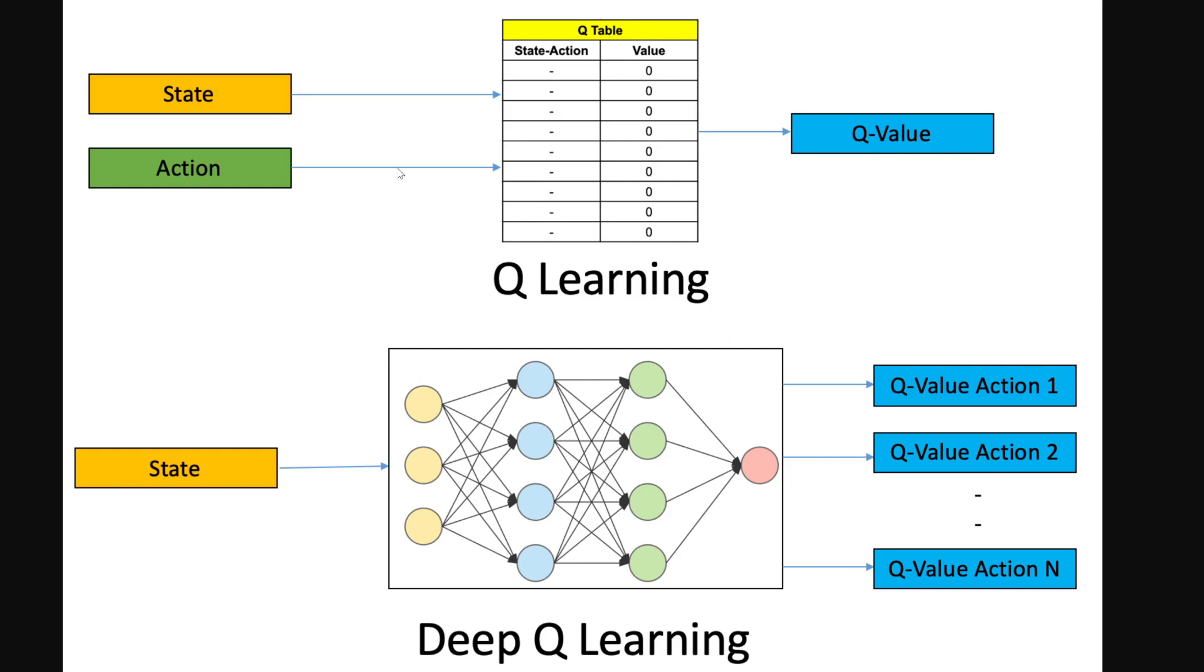The difference is here you just specify the state and you get the Q values associated to all the actions, and then you can pick out the maximal or whatever you want to pick out. That's the main difference.